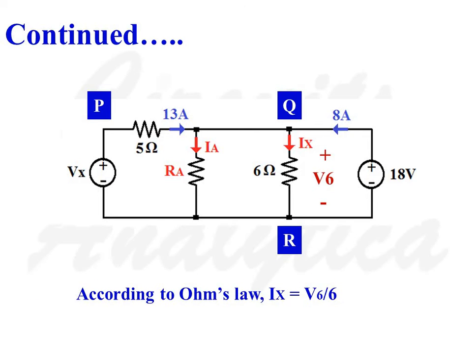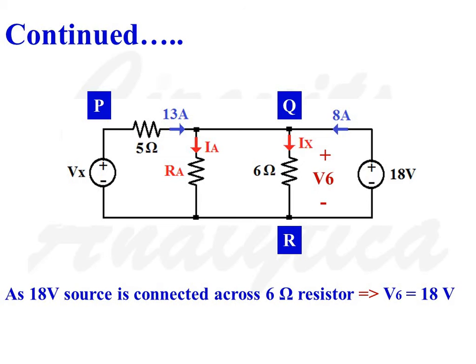According to Ohm's law we can write IX is equal to V6 divided by 6. As the 18 volt source is connected across 6 ohms resistor, we can write V6 is equal to 18 volt.